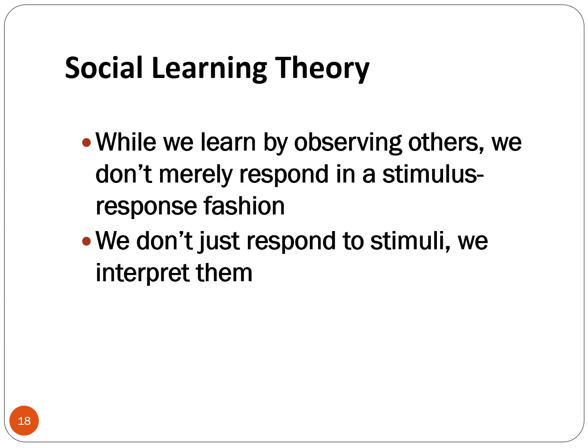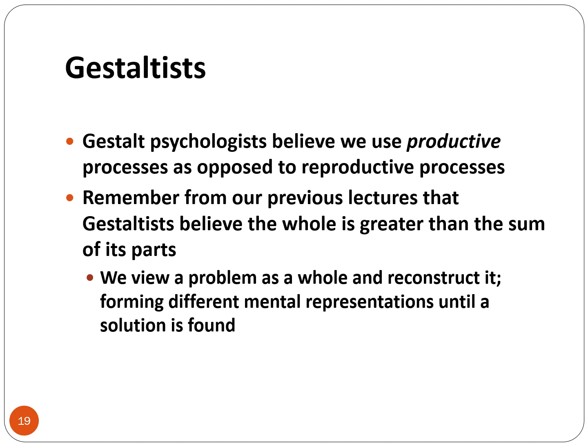Recall, however, that the social learning theorists advanced the idea that we learn by observing role models and by modeling their behavior. The social psychologists say that we don't just mimic others in a monkey-see, monkey-do kind of way. Like the gestaltists, social learning theorists say we don't just respond to stimuli like Pavlov's dogs, but we have the ability to interpret the stimuli and make decisions based on those higher order cognitive abilities. Unlike the behaviorists who believe that we solve problems using a habitual reproductive process, the gestaltists advanced the idea that we use productive problem solving processes.